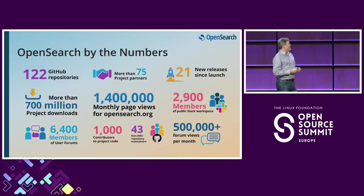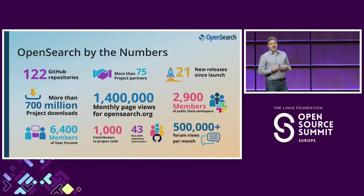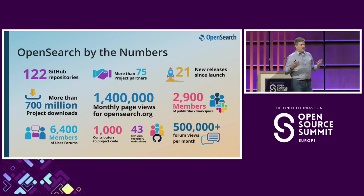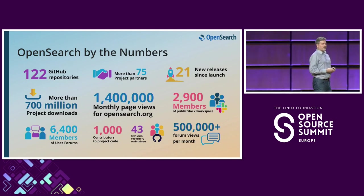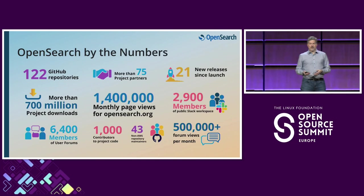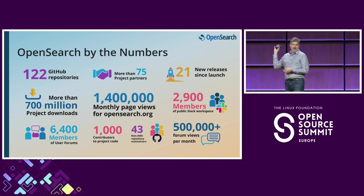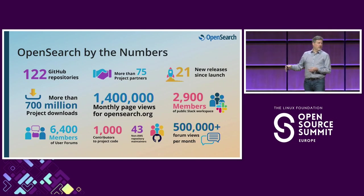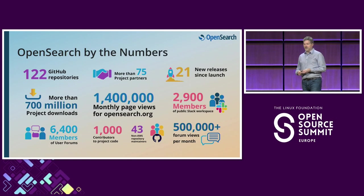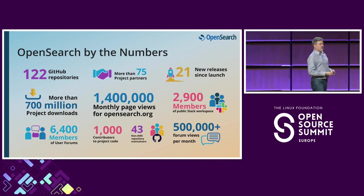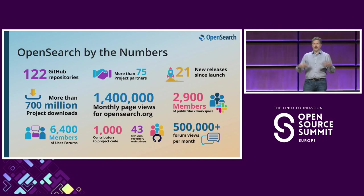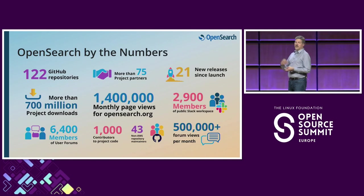All of this work — building the community, building trust, delivering a great product — has resulted in a lot of momentum. There are 122 GitHub repos, 75 partners working inside OpenSearch.org, 21 releases, a public Slack channel with 2,900 people, and 6,400 users in the OpenSearch forum. You can see why moving OpenSearch to the Linux Foundation helps us scale. We really needed help leveraging Linux Foundation's expertise to scale this community, ensuring a neutral governance model to welcome large-scale contributors to build the best possible software together.